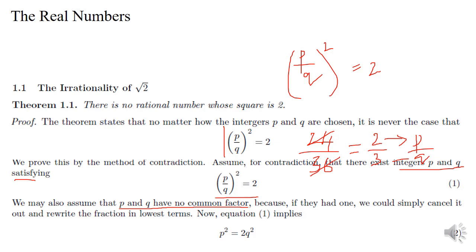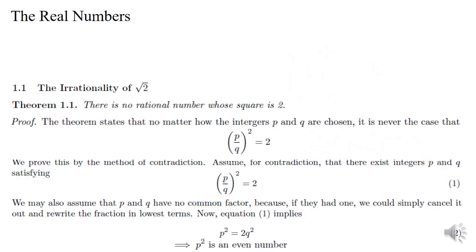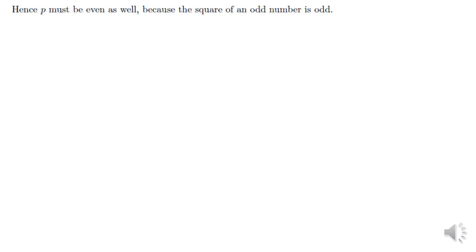From equation number 1, P² by Q² equals 2. Cross-multiplying, we get P² equals 2Q², which we mark as equation number 2. Here, P² is 2 multiplied by Q², meaning P² is a multiple of 2 — that is, P² is an even number. Since the square of an even number is even and the square of an odd number is odd, P² being even implies that P is also an even number.